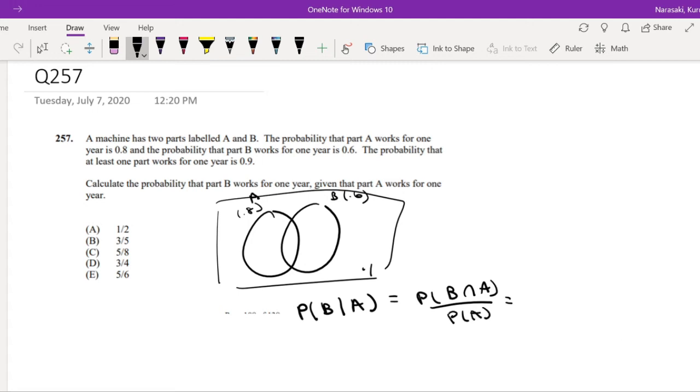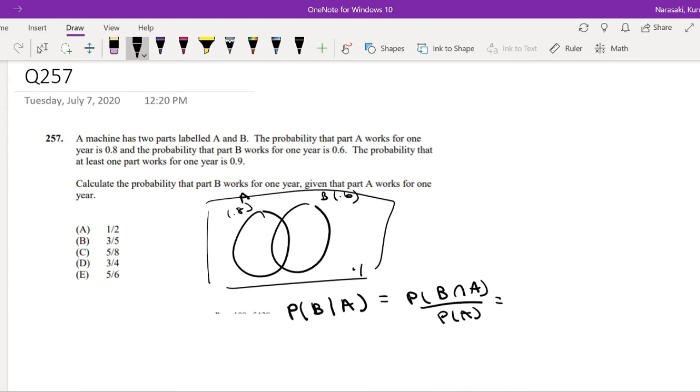Okay, so what is the probability of A? Well, that's equal to 0.8, but we don't really know what probability of B and A is quite yet. We can find that out pretty easily. We can use that formula.